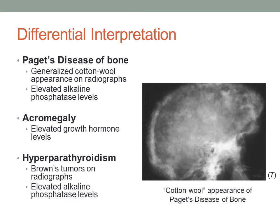Differential interpretations of osteopetrosis include other osteosclerotic bone diseases. Paget's disease of the bone is included in the differentials because of bone and neurological pain involvement. Notice the appearance in the radiograph on the right of a generalized cotton wool appearance of bones. Along with this, patients will have elevated alkaline phosphatase levels, which will distinguish this disease from osteopetrosis.